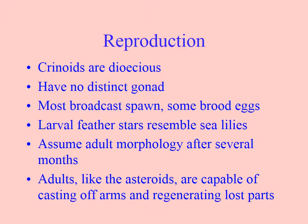They are dioecious — male and female. They mostly broadcast spawn, but some brood their eggs. The feather star and the sea lily look very similar in the larval stage. They are capable of casting off arms and regenerating lost parts, so they are very good at regeneration, very much like the other echinoderms.